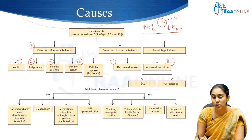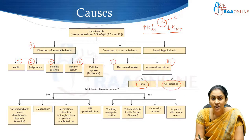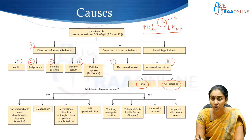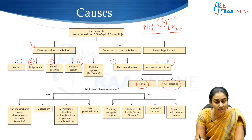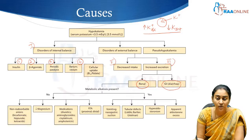Then there are patients with increased potassium excretion. When discussing increased potassium excretion, we often focus on renal excretion and forget the gastrointestinal tract. There are several causes of gastrointestinal potassium loss, ranging from chronic diarrhea to laxative abuse to villous adenomas, which secrete potassium and cause significant potassium loss into the GI tract.